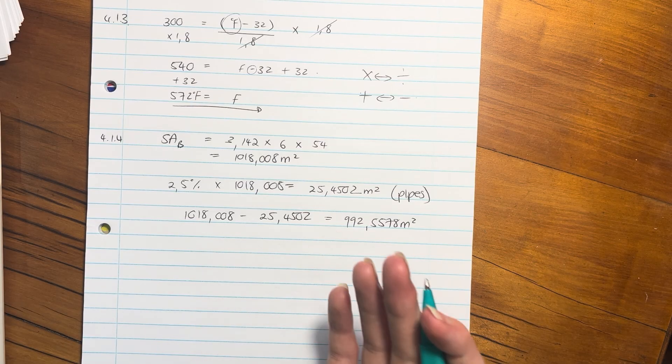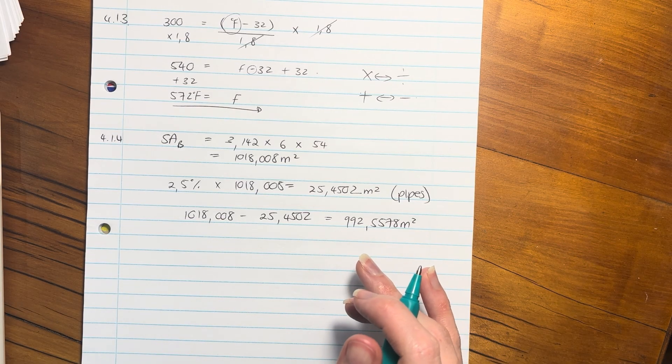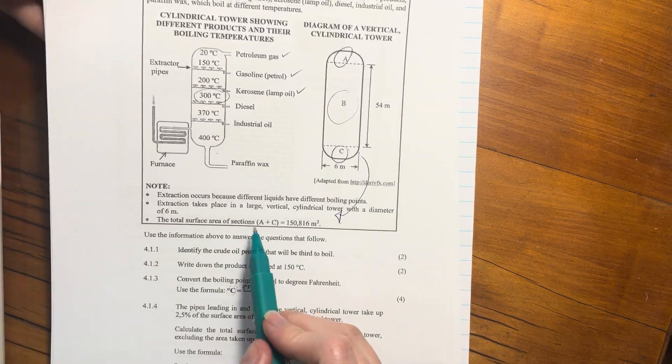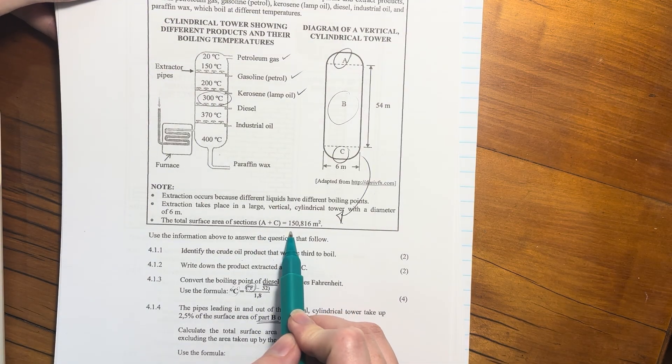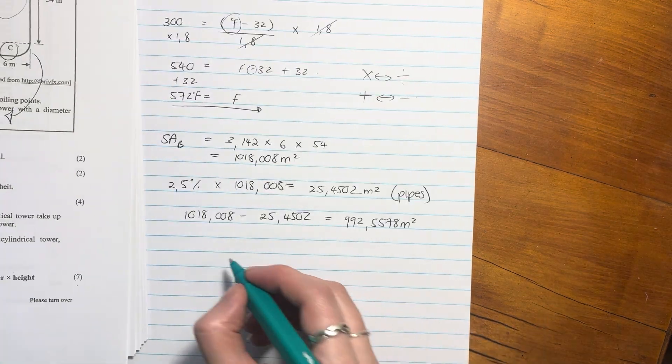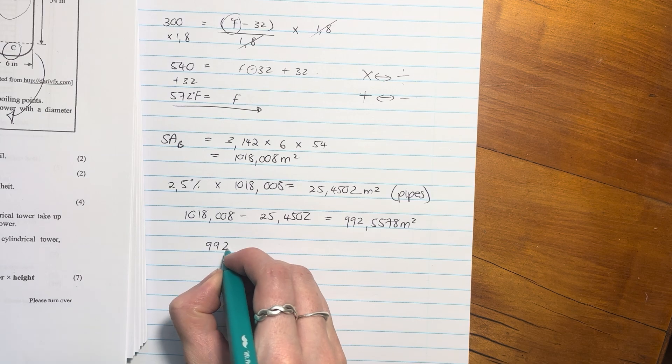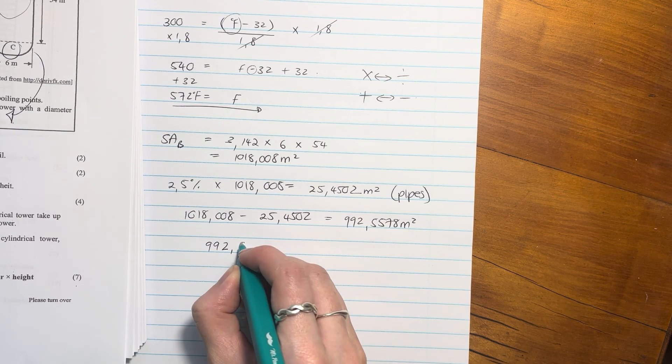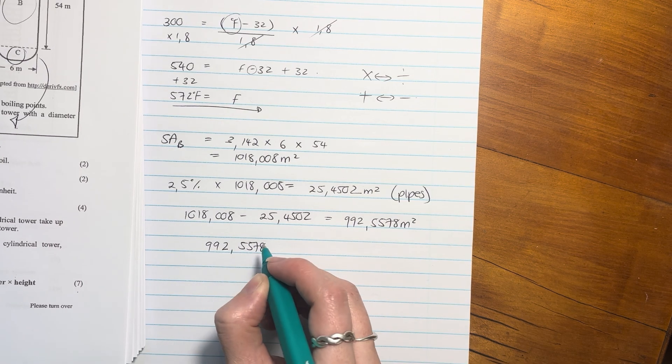But it wants the whole cylindrical pipes. Now I need to add in what is the surface area of A and C. So we have to add that in. So we're going to say 992,5578.